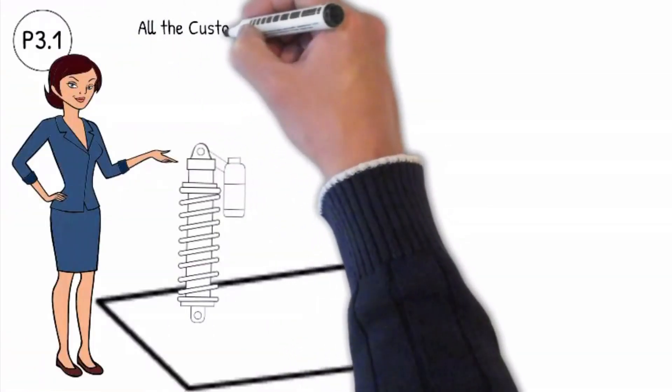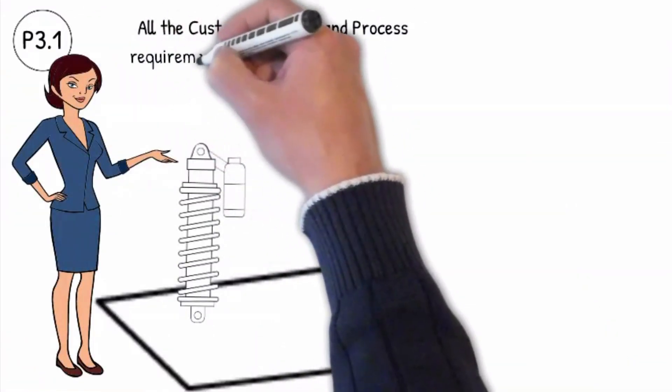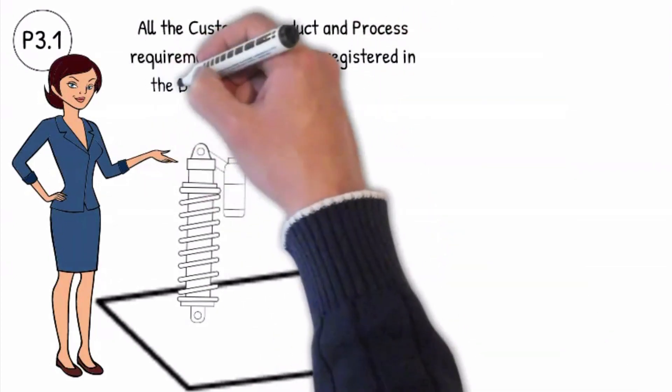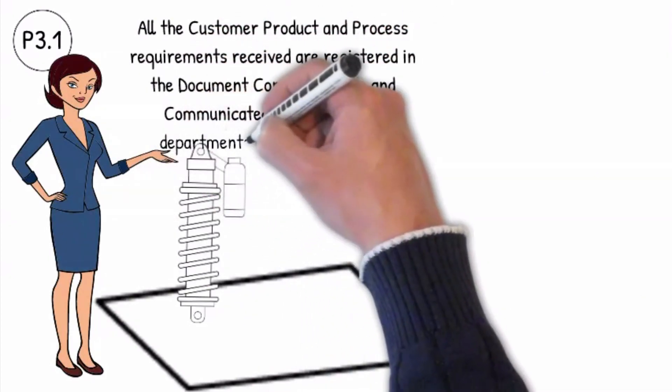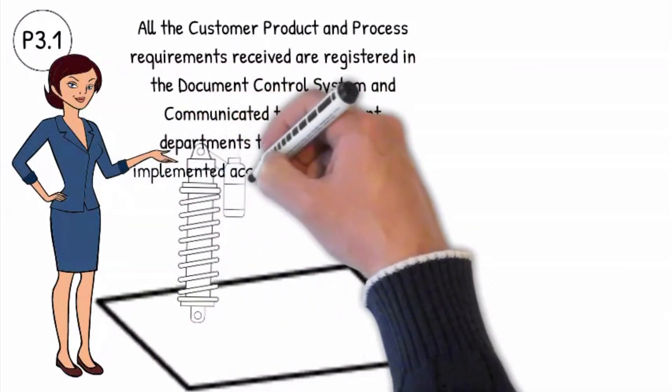All the customer product and process requirements received are registered in the document control system and communicated to the relevant departments to be analyzed and implemented according to the timing plan.